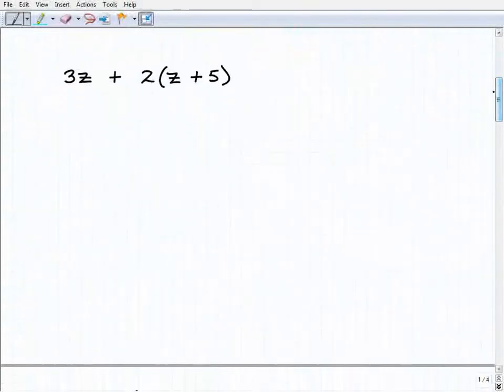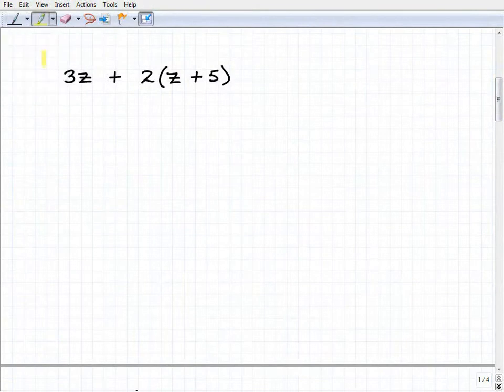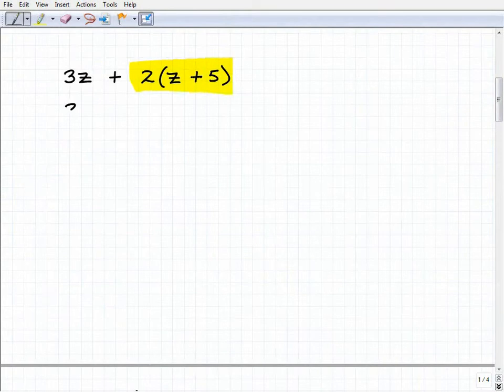Another problem here. This time the simplifying to actually see the terms is going to involve the distributive property we talked about. So this is going to be 3z plus, now you got to go ahead and distribute that 2 to the z plus 5.